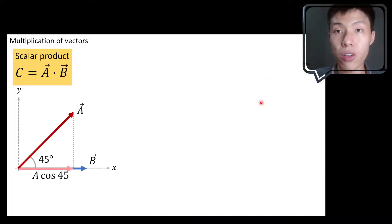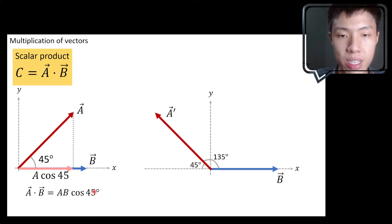So this is the original situation. If you want to find A dot B, it says AB cos 45 degree. I've discussed it quite a lot of times. But now if we shift the new vector A here to over here,